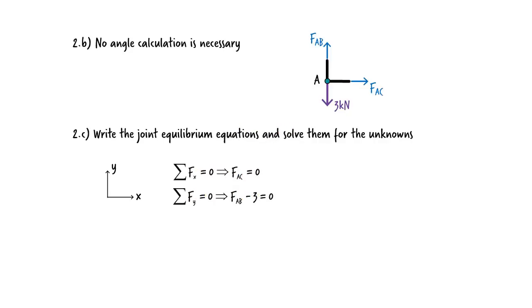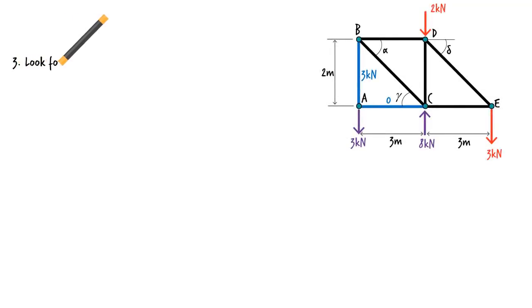Solving these equations for the two unknowns, we get... There are a few more member forces to be determined. Let's look for a joint with at most two unknown forces.